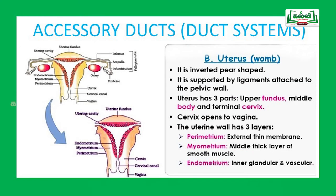The uterus is otherwise called the womb. It is an inverted pear shape and supported by ligaments attached to the pelvic wall. The uterus has three parts: the fundus (upper part), the body (middle part), and the cervix (the terminal part). The cervix opens into the vagina. The uterine wall has three layers: the outer thin layer called perimetrium, the middle thick smooth muscle layer called myometrium, and the inner glandular and vascular layer called endometrium.